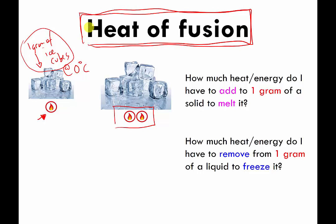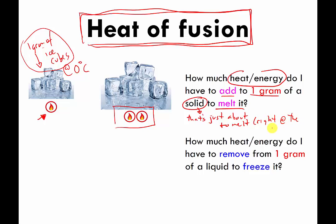The more formal definition of heat of fusion is: how much heat or energy do I have to add to one gram of some solid in order to melt it — specifically, one solid that's just about to melt, right at the melting temperature. It has to be at that point; otherwise you'd also have to do a specific heat calculation to raise the temperature of the material. So heat of fusion only works when the temperature doesn't change. We're going from ice at zero degrees Celsius to liquid water that is also at zero degrees Celsius — the temperature is not changing.